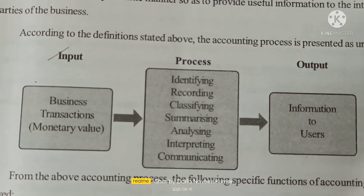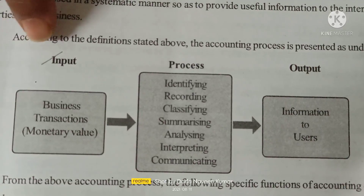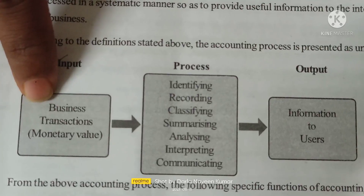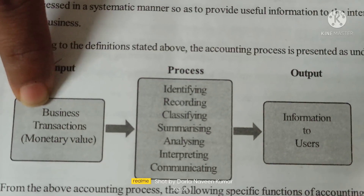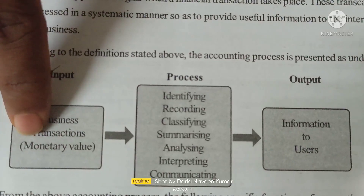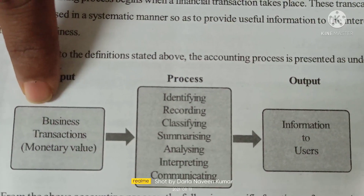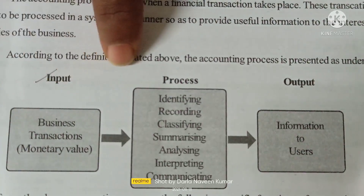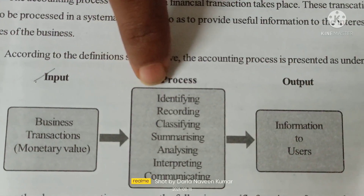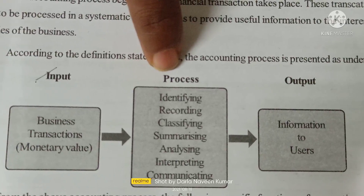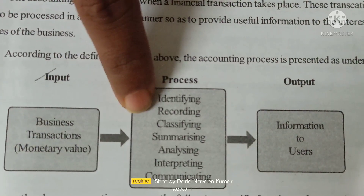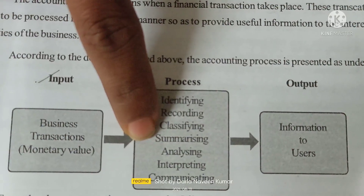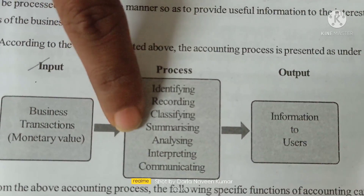Accounting Process: it starts with input. The input is a business transaction — business transaction is the base for the input. A business transaction means any transaction that must be in monetary value: buying, selling, exchanging, or payment. Through this business transaction we identify the nature of the transaction, then record in the books, classify, do the totals by summarizing, and make separate accounts.